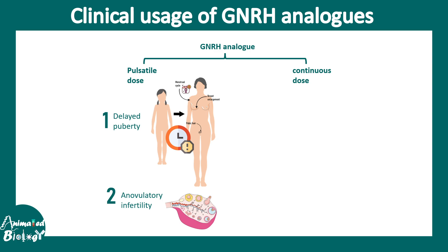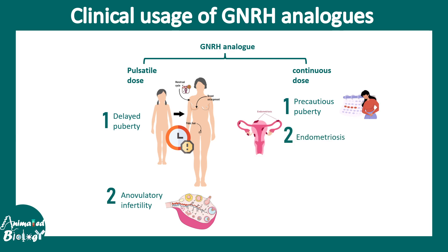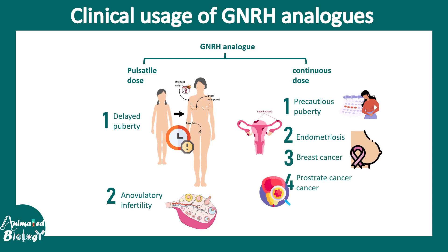A continuous dose of GnRH analogues is inhibitory and can be used to treat precocious puberty, where the transition to puberty happens very early. There could also be problems like endometriosis, breast cancer, and prostate cancer. In breast cancer, estrogen is the key problem — estrogen is secreted when LH and FSH stimulate the ovarian follicle, so blocking GnRH analogues reduces LH and FSH, lowering estrogen levels as a treatment. Similarly, in prostate cancer, excess testosterone can be blocked by blocking the gonadotropin hormones.